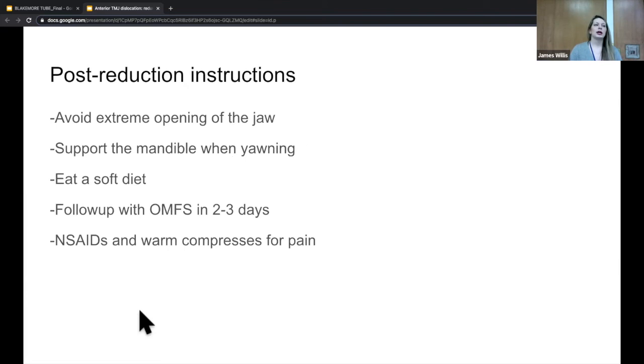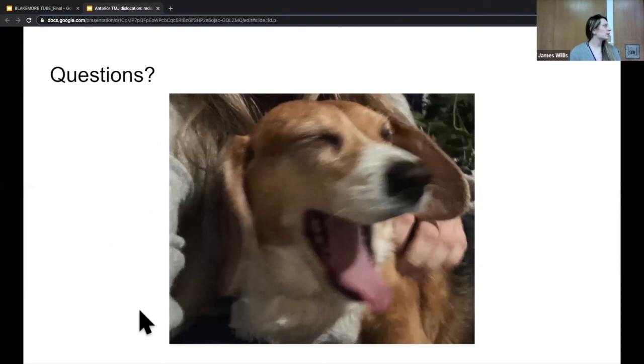What do you tell your patient after you successfully reduced the TMJ dislocation? Tell them to avoid extreme opening of the jaw. You can suggest that when they're yawning that they support their lower jaw with their hand. They should be eating soft foods, avoid any gummy foods, gum, or really tough foods, use NSAIDs for pain control and warm compresses, and follow up with OMFS in two or three days. This is my mom's dog about to dislocate her TMJ. Any questions?